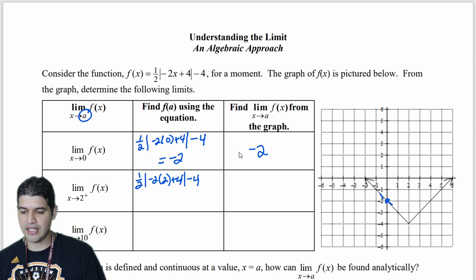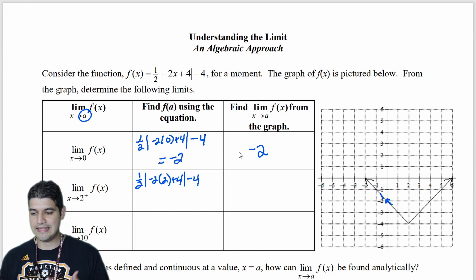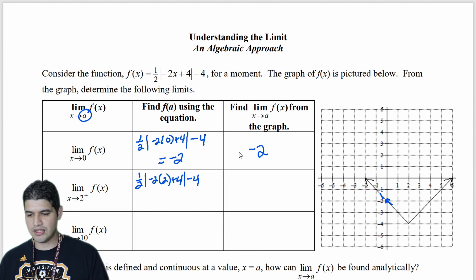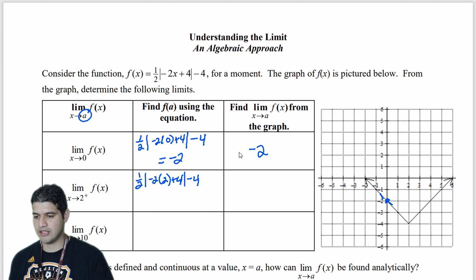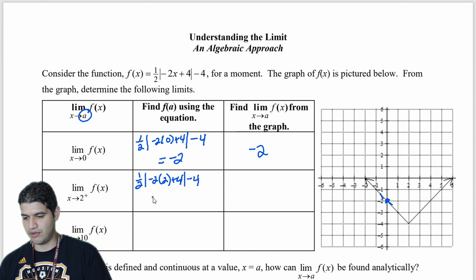So negative 2 times 2, that's negative 4, plus 4, that gets me 0. Absolute value 0 is still 0, times half is 0. 0 minus 4 gets me negative 4.